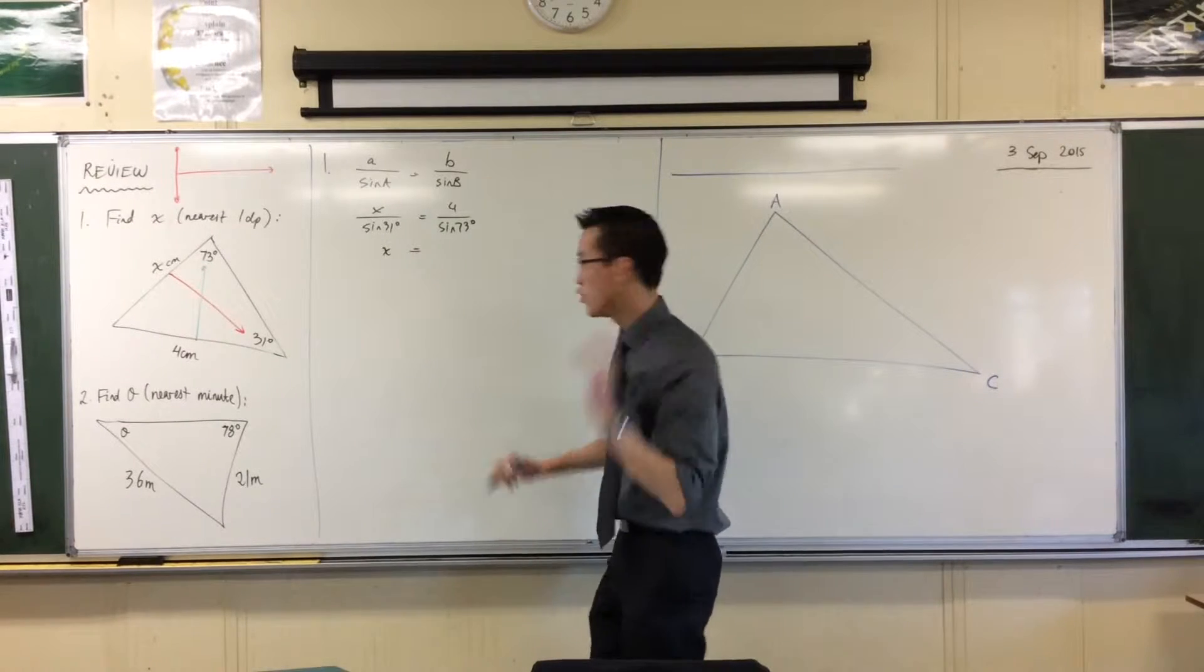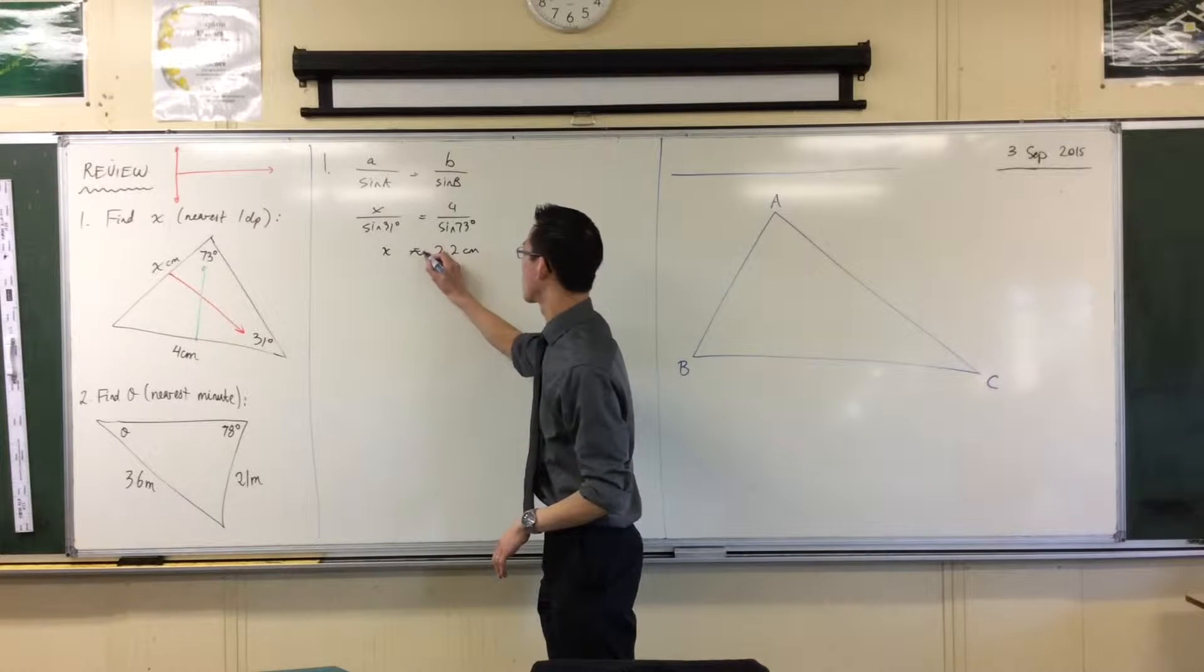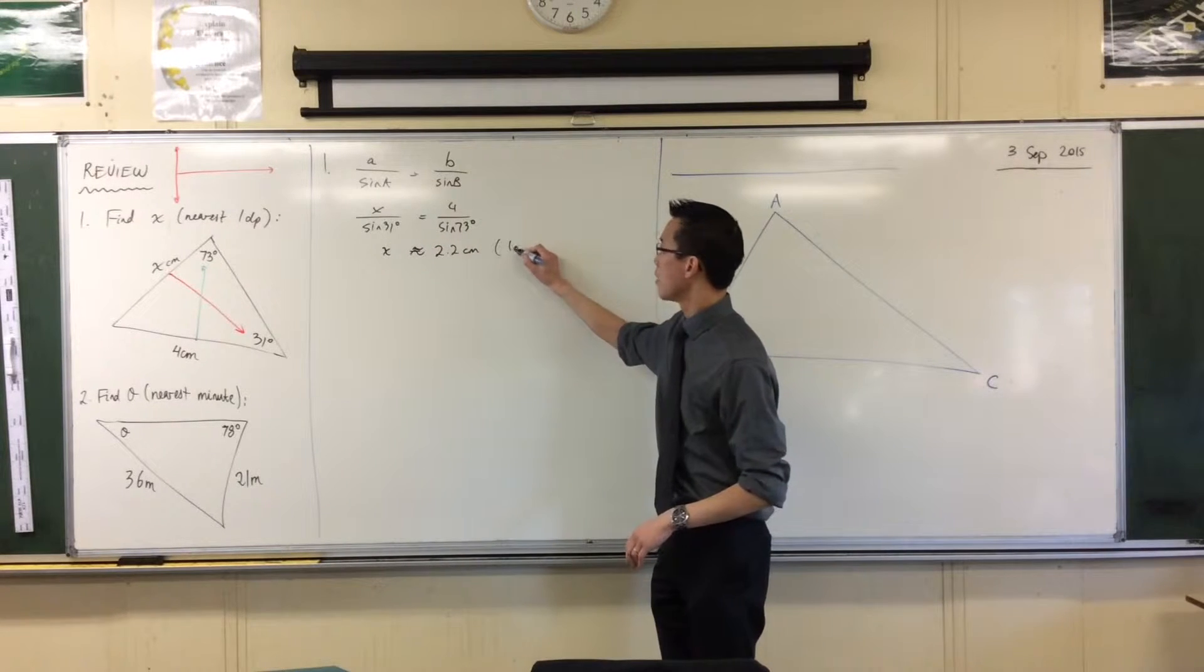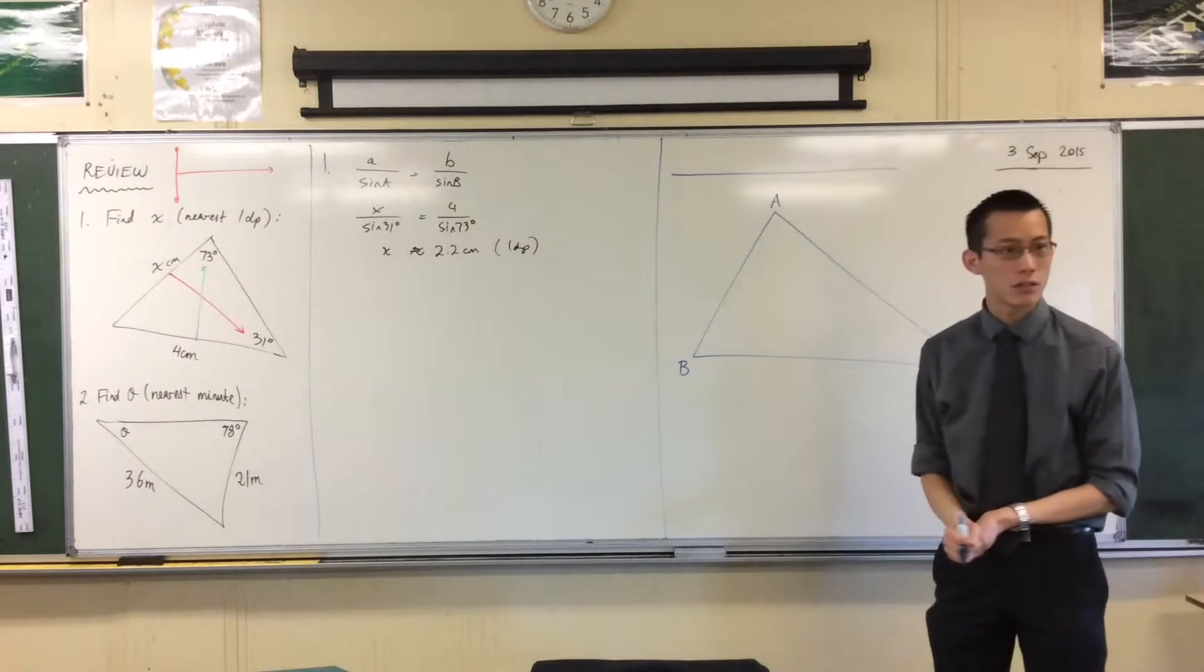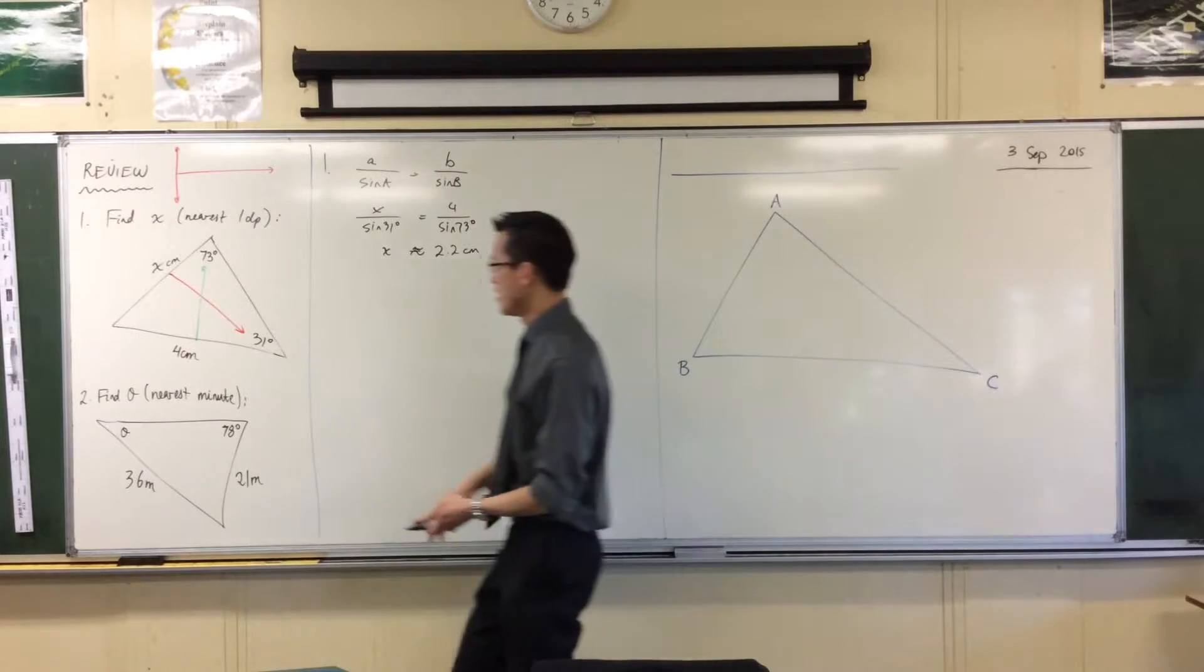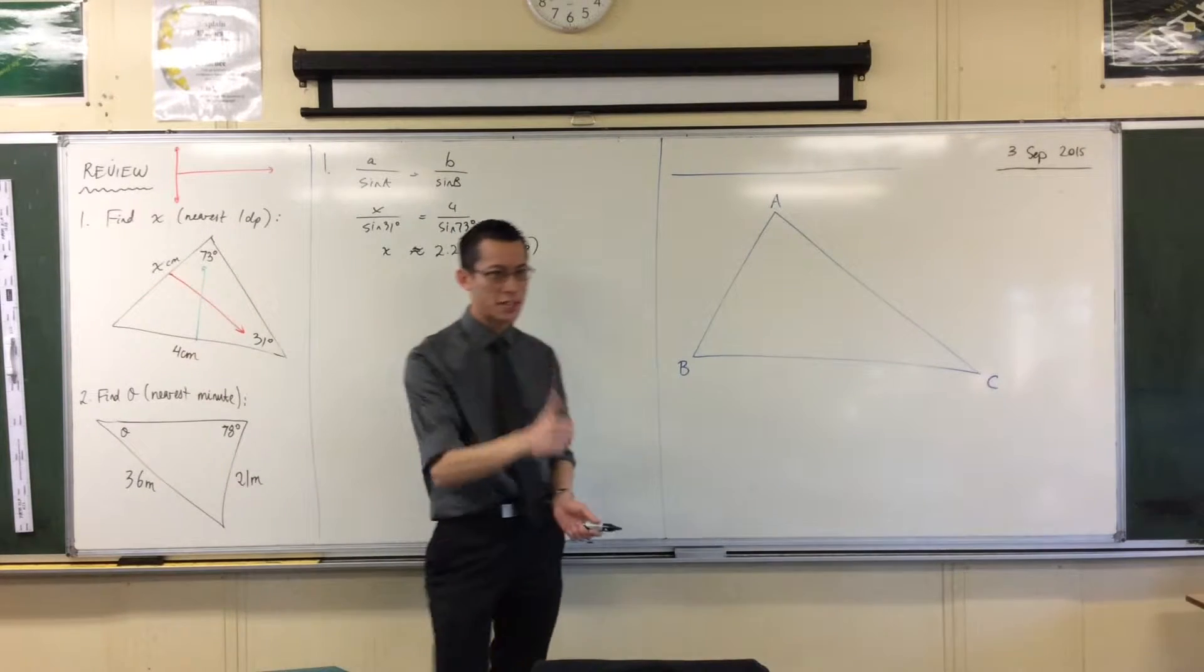2.2. And that's approximately equals. You do a sense check. Does it look like it's a reasonable number based on the diagram that we've got? Yeah, it does. Right? Big angle, bigger side. Smaller angle, smaller side. Checked out. Okay, great. We'll move on to number 2.